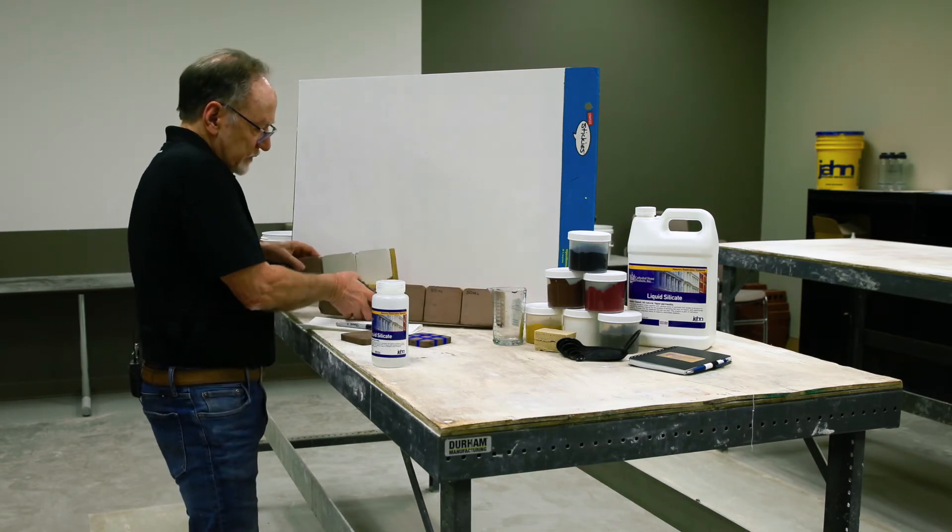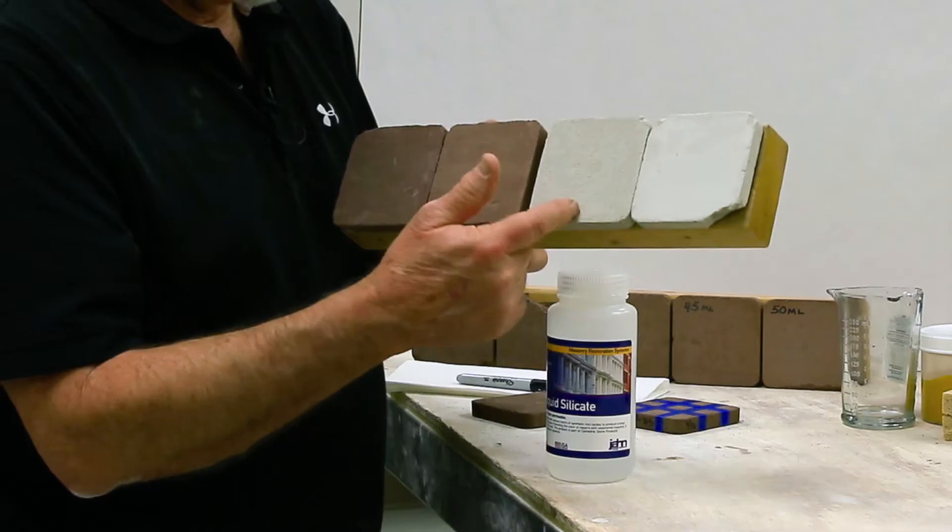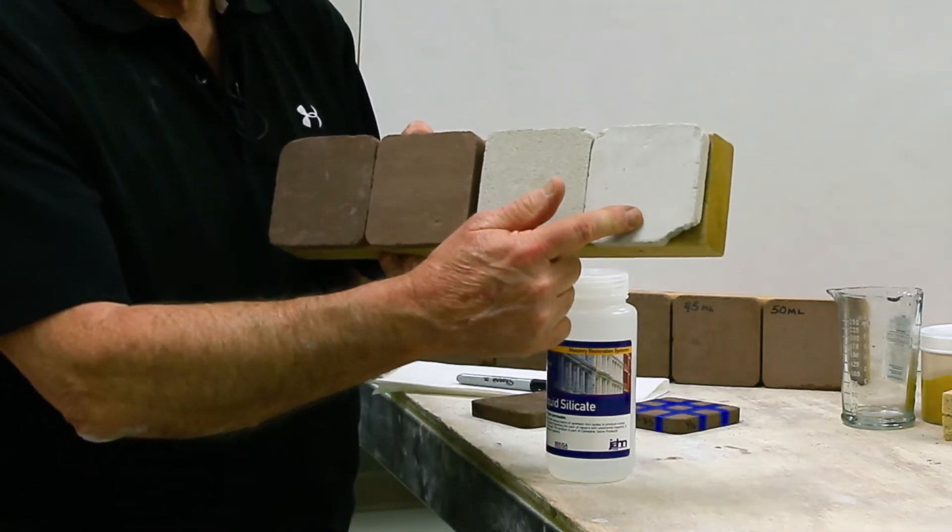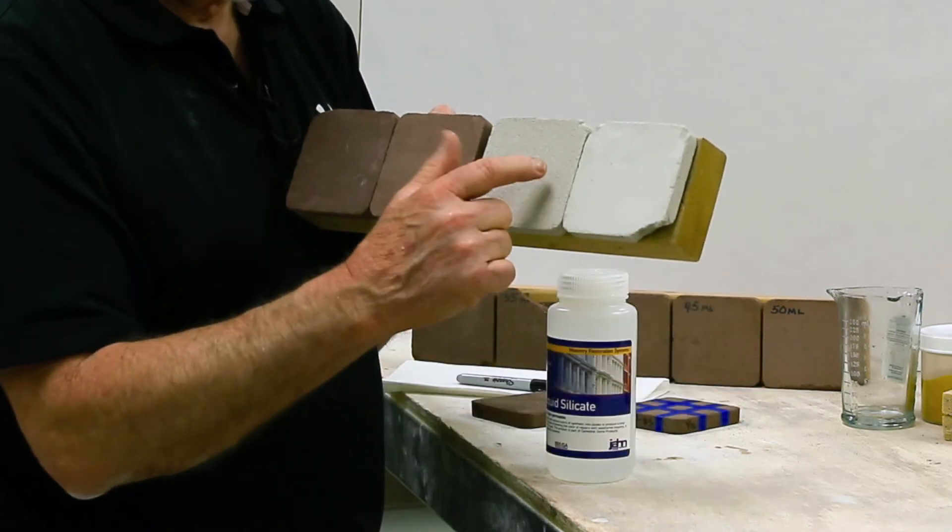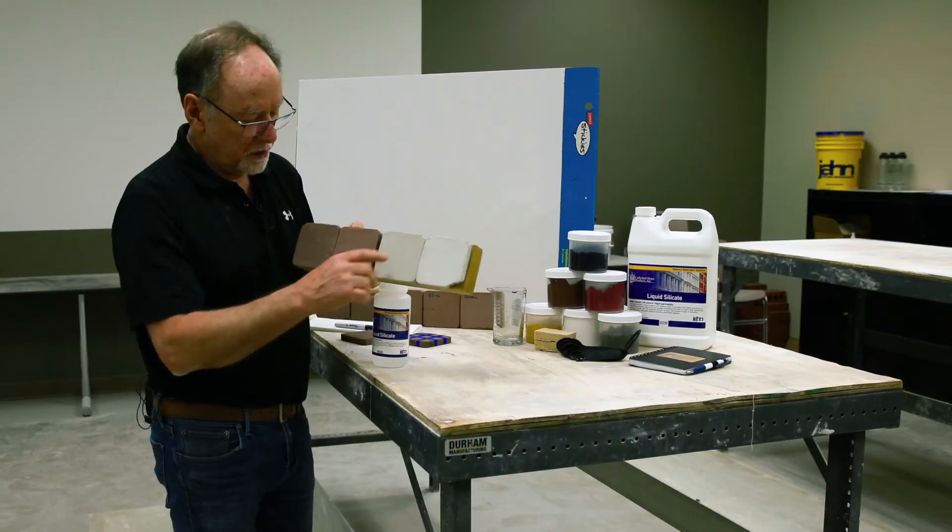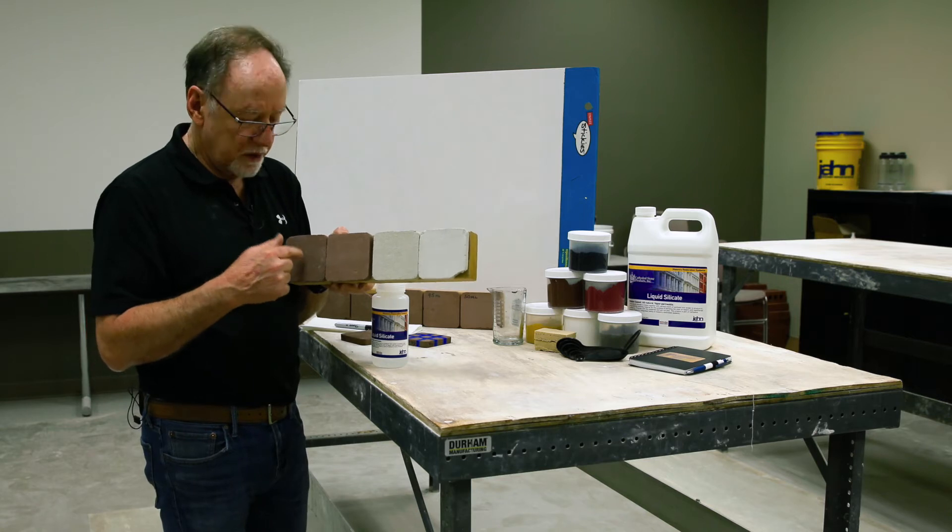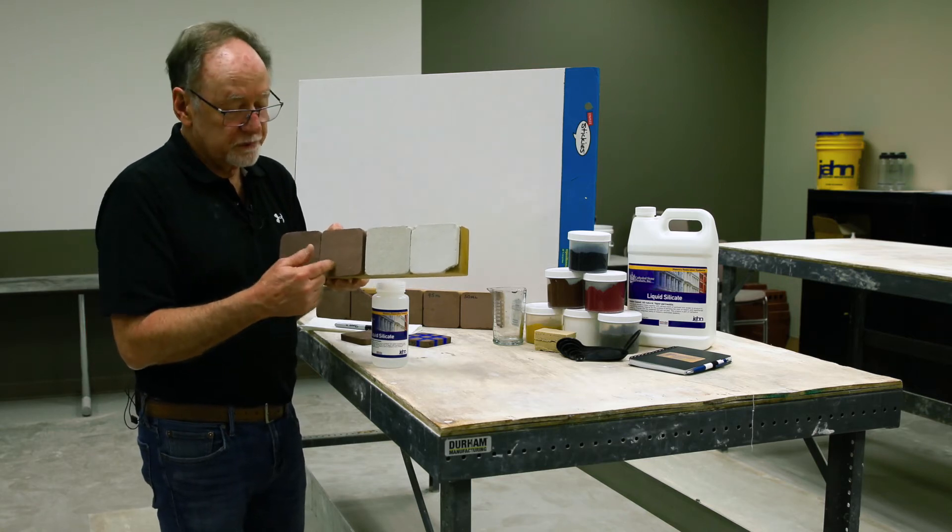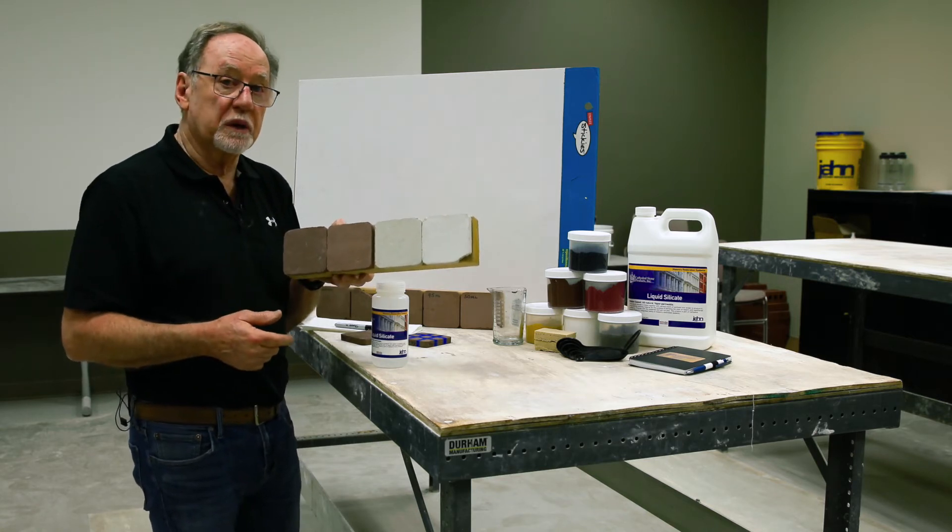This is another example of a limestone finished too soon or smoothed with the trowel. You can see the original color here. Same thing here. This is just finishing. Nothing wrong with the mortar, but you might want to change the color to make it blend better.